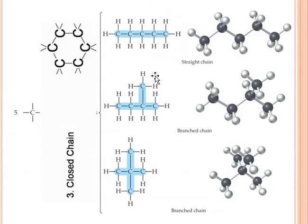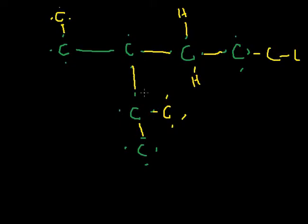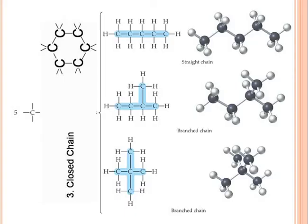I'm going to show you the types of chains carbon can form. This is your straight chain — you can see carbons forming a straight linear alignment, which is known as a straight chain. For branching, just like a tree has branches, carbon can also form a branched chain. Carbon forms a straight chain as well as a branched chain. You can see here where carbon has formed branches — this is known as a branched chain.